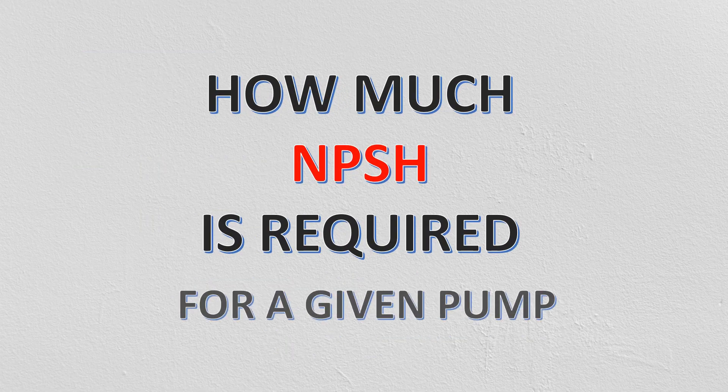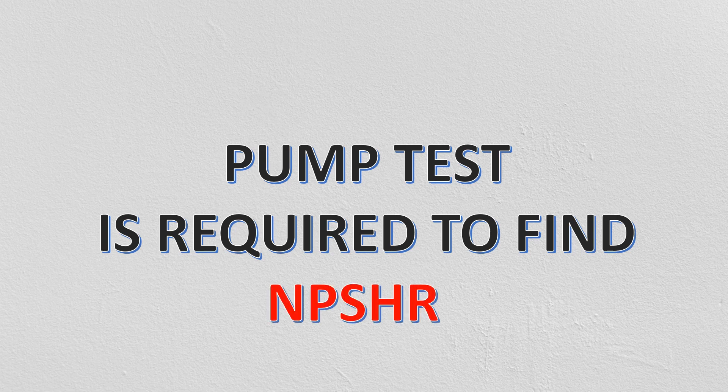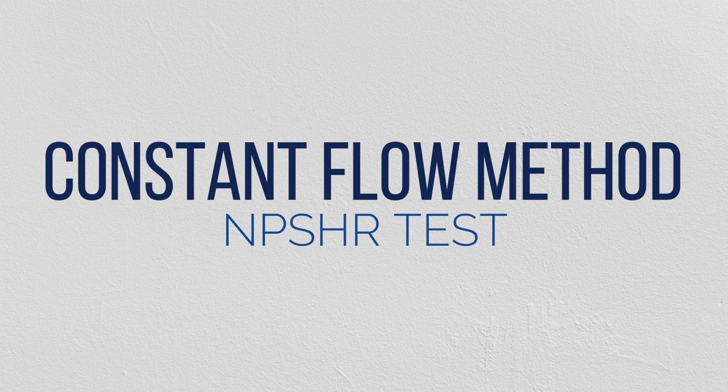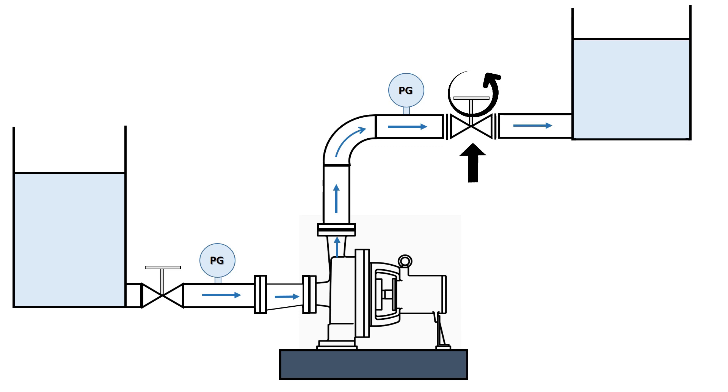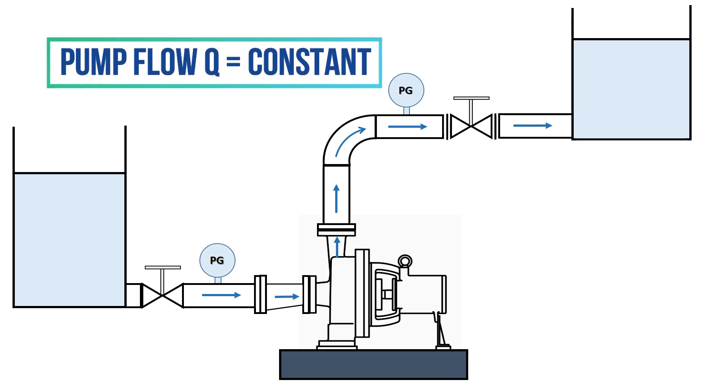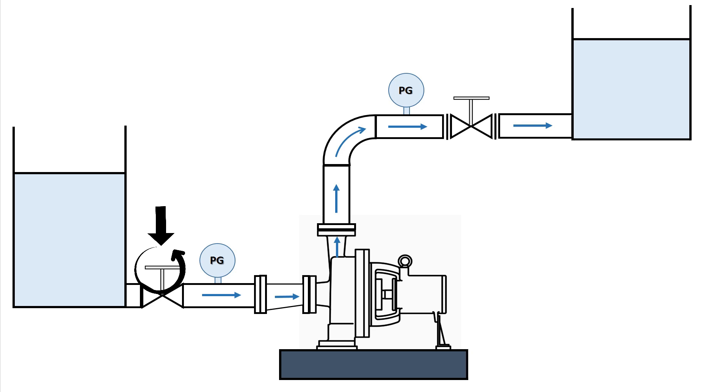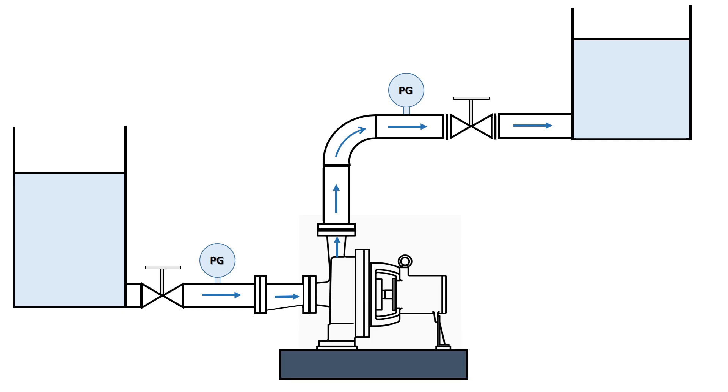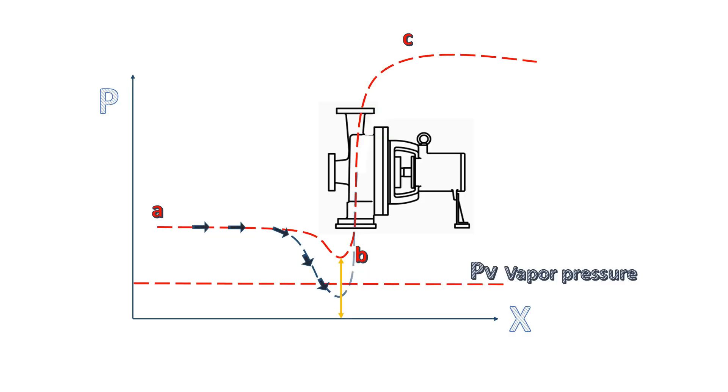But how much net positive suction head is required can be calculated by testing a pump. The most common method, often known as constant flow method, is used to determine the NPSHR. In this method, the pump discharge valve is kept at fixed open position so that pump flow remains constant. However, the pump suction valve is throttled. Due to throttling of suction valve, frictional losses in the suction pipe increases. And because of this increase in frictional losses, net positive suction head available at pump inlet reduces.